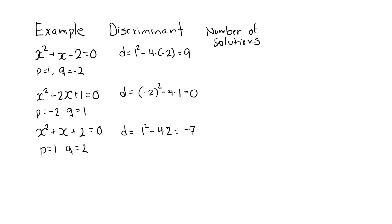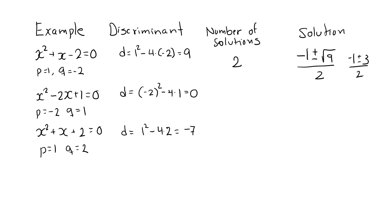For our examples: the first discriminant was strictly positive, and it has solutions minus 1 plus or minus the square root of 9, divided by 2, or minus 1 plus or minus 3 divided by 2. The plus sign gives x equal to 1, and the minus sign gives x equal to minus 2. The second discriminant was 0, and the single solution is x equal to 1, since minus p equals 2. The third discriminant was negative, meaning that equation has no solutions.